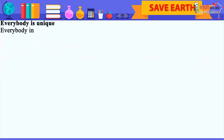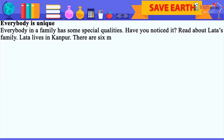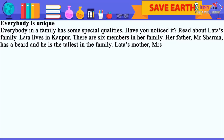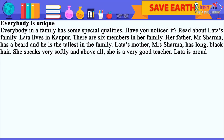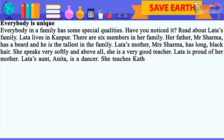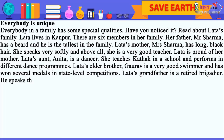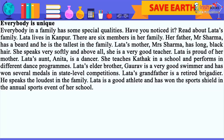Everybody in a family has some special qualities. Lata lives in Kanpur and there are six members in her family. Her father, Mr. Sharma, has a beard and is the tallest in the family. Lata's mother, Mrs. Sharma, has long black hair, speaks very softly, and is a very good teacher. Lata's aunt Anita is a dancer who teaches Kathak in a school and performs in dance programs. Lata's elder brother Gaurav is a very good swimmer and has won several medals in state-level competitions. Lata's grandfather is a retired brigadier who speaks the loudest in the family. Lata is a good athlete and has won the sports shield in the annual sports event of her school.